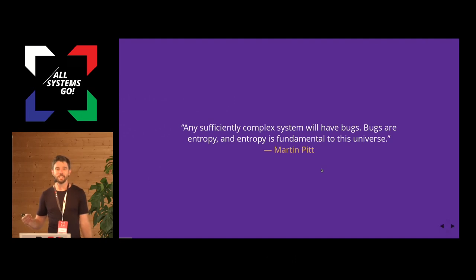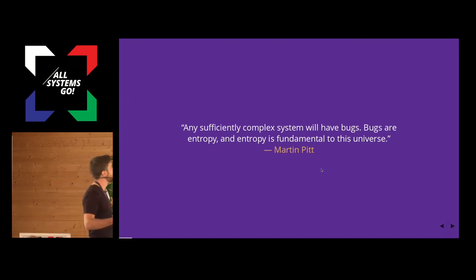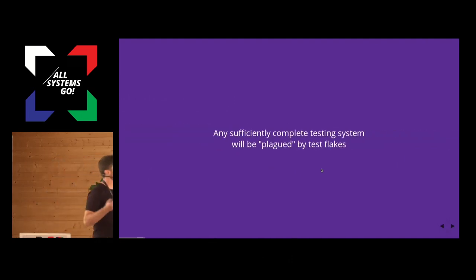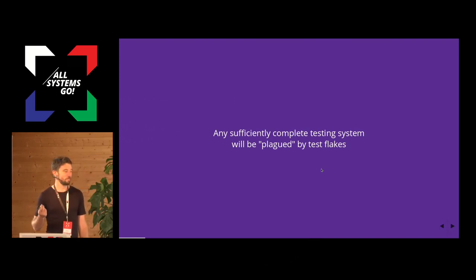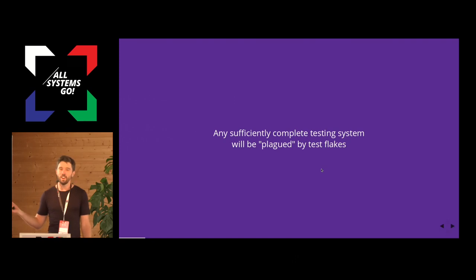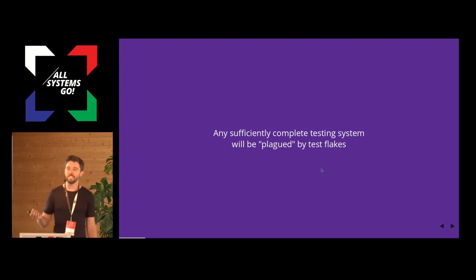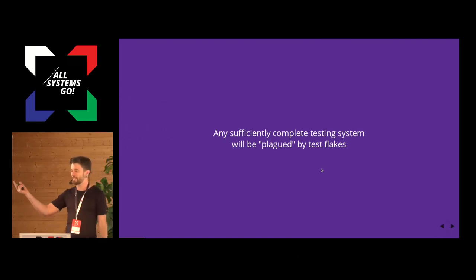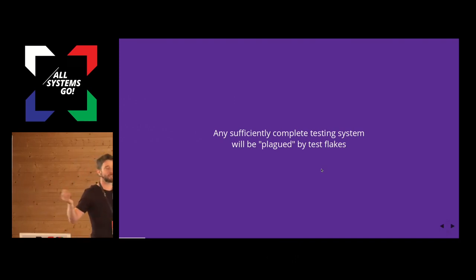There will always be entropy; we want it to have less effect. In addition, for anyone who's worked with testing to a decent extent will know that false positives, also known as flakes, are everywhere. They're a pain in the butt, and they constantly happen in a pull request that you open — some test will fail in some unrelated part of the software or some subsystem. This is super annoying.